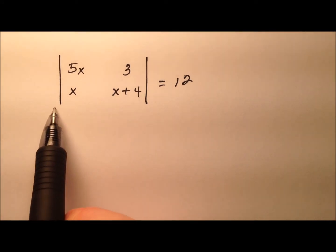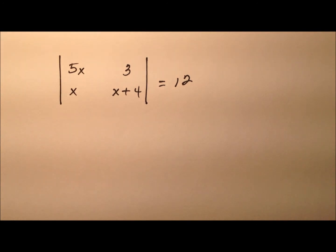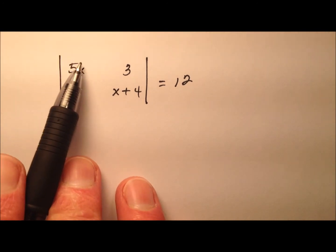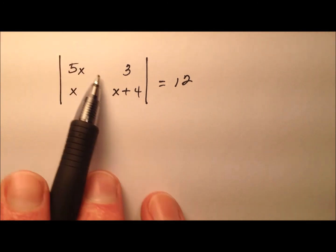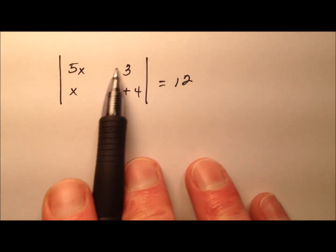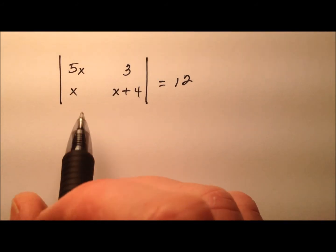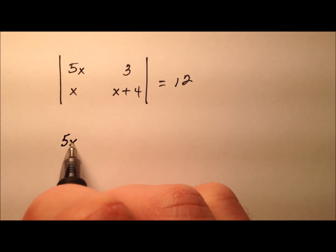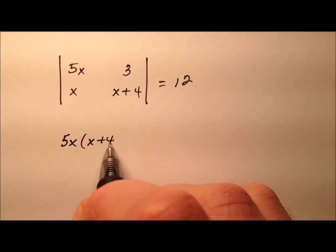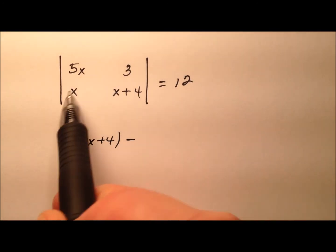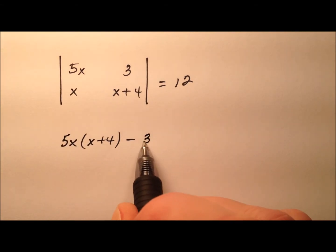Okay, so on this left side, it looks like we should evaluate this determinant first. To do so, we'll multiply the entries in this main diagonal and we'll multiply the entries in the minor diagonal and we'll subtract those. So it'll look like 5x times that x plus 4 and we'll subtract this product, so minus 3x and that will equal that 12.